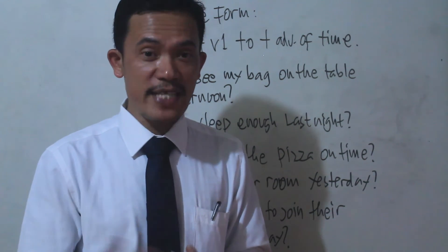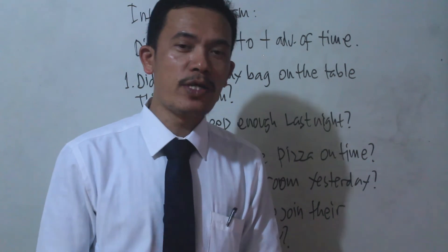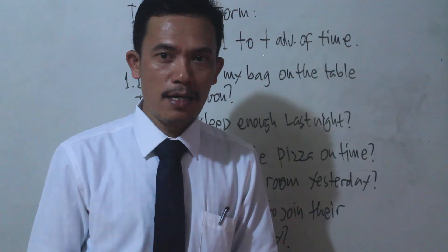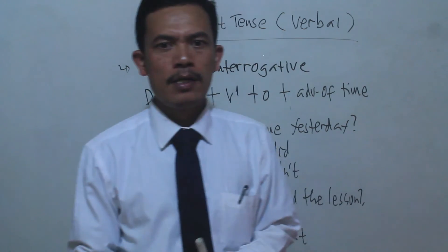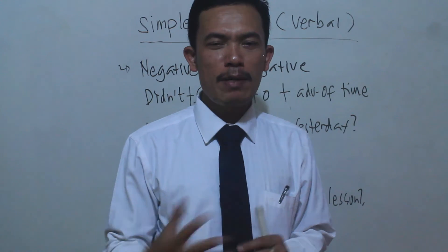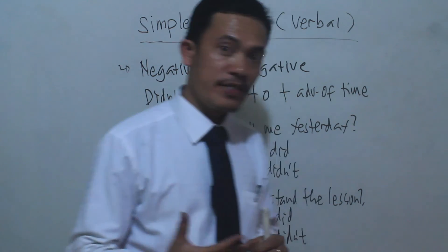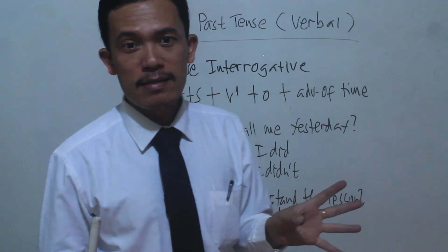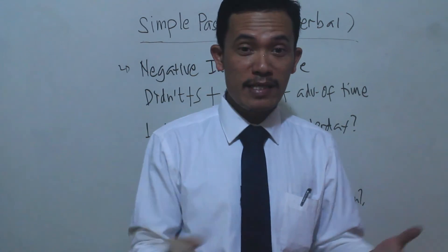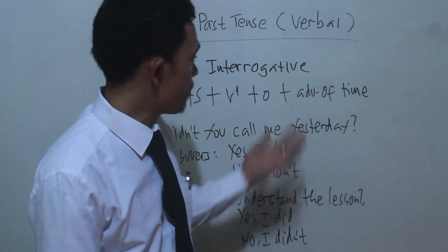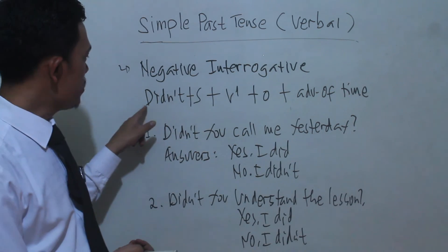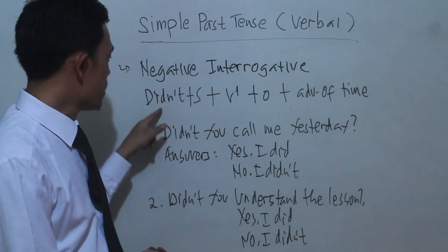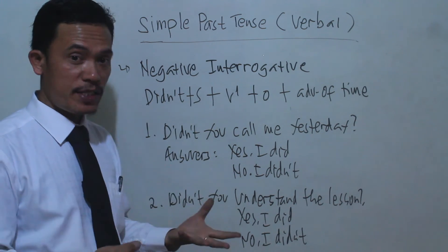So these are the main points to understand when forming simple past tense for activities that happened in the past. Next time when you are creating or telling a story, or sharing your experiences, you have to use simple past tense. The last part is the negative interrogative. The formulation is: Didn't + subject + verb 1 + object + adverb of time.